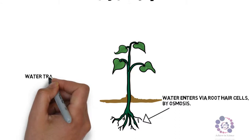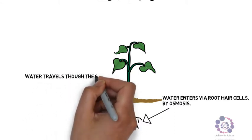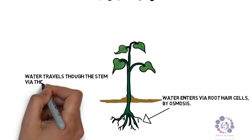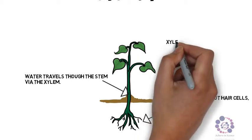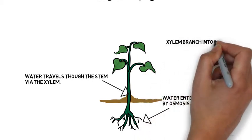The water then travels up through the stem via the xylem. The xylem then will branch into veins and then carry the water into the leaves. This is where it's going to be used for photosynthesis.